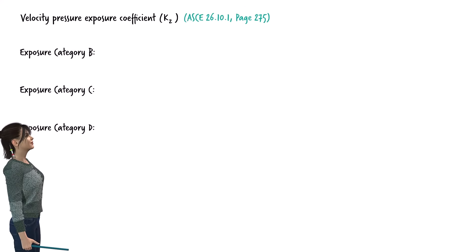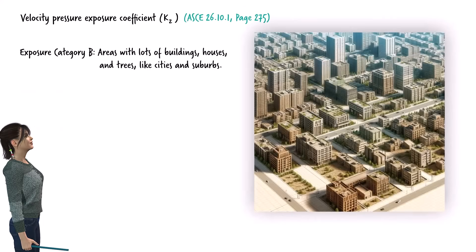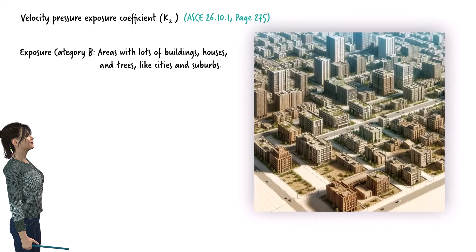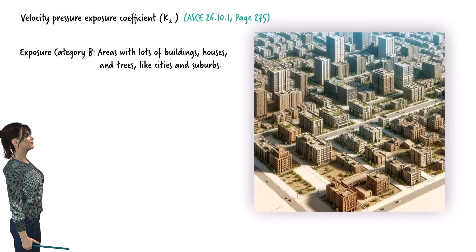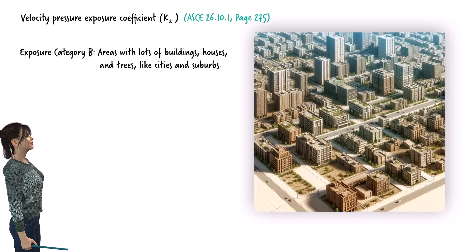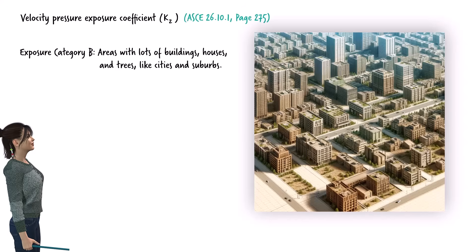We have categories B, C, and D. Category B is for areas with lots of buildings, houses, and trees, like cities and suburbs. These buildings and trees act as barriers that slow down the wind, making it less strong near the ground. This category applies to places where many closely spaced structures reduce the wind's impact on any single building.